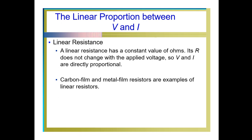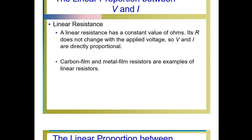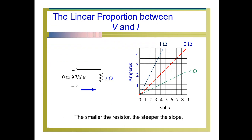There are two types of resistances: linear resistance and non-linear resistance. A linear resistance has a constant value of Ohm — its R does not change with the applied voltage, so V and I are directly proportional. Examples of linear resistances are carbon film and metal film resistors. For different resistance values — 1 Ohm, 2 Ohm, 4 Ohm — we get different characteristics: the smaller the resistor, the steeper the slope.